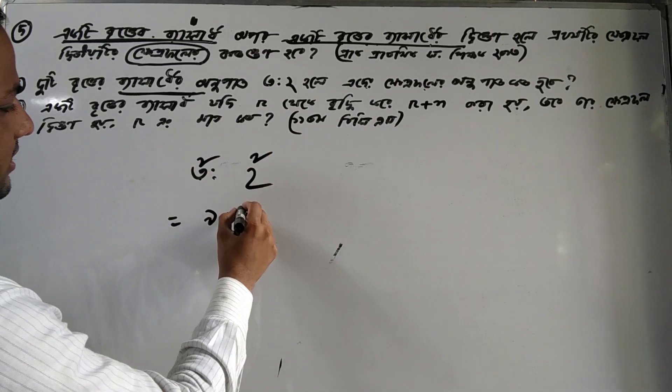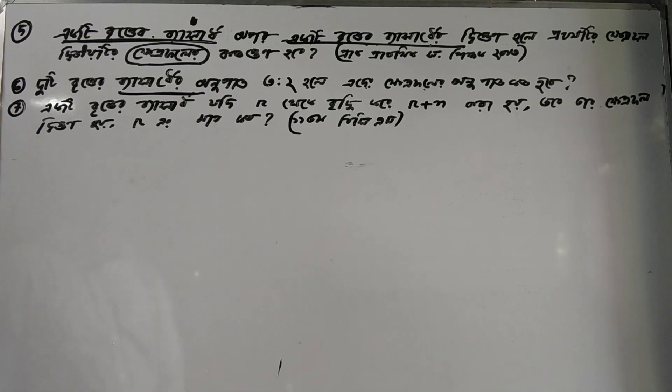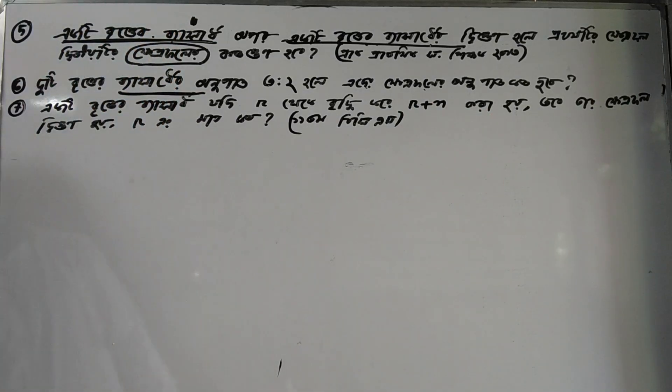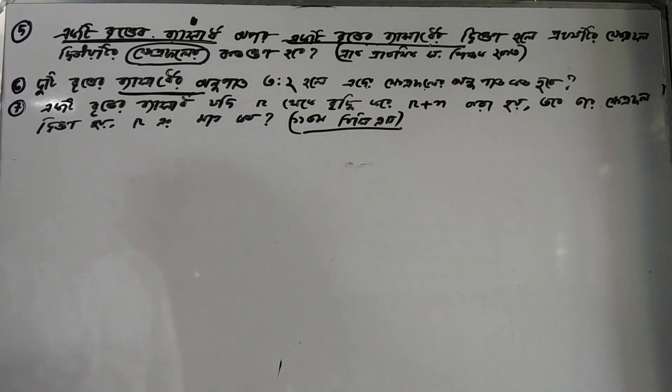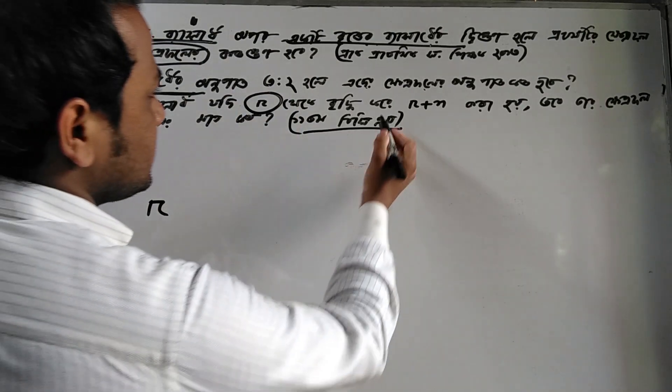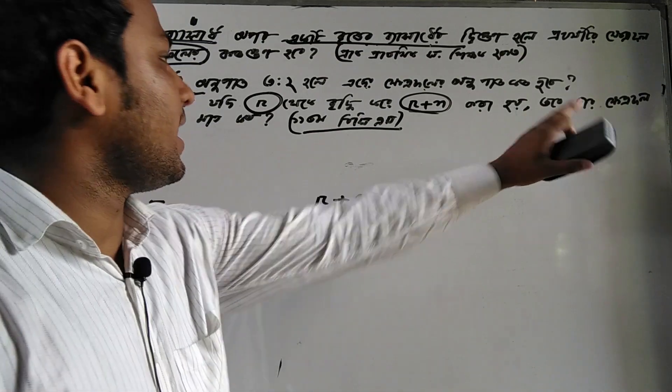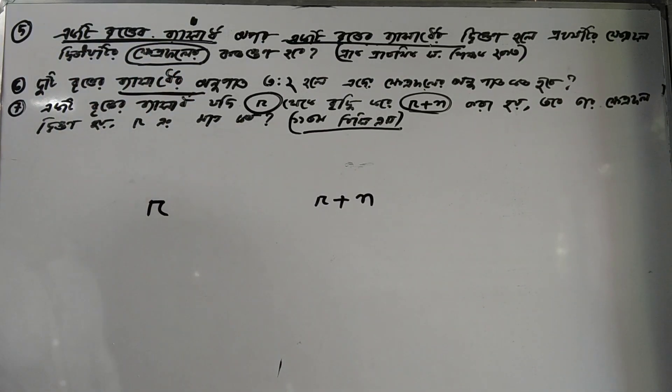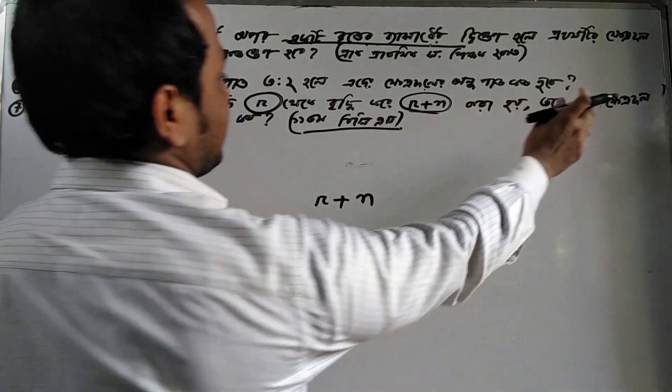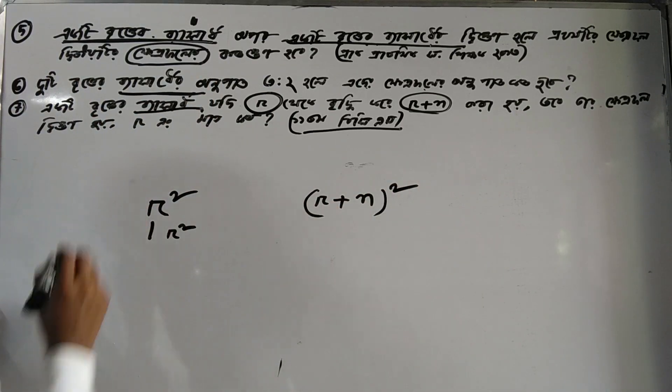Looking at option number 7, we see r plus n to some power. Now I'll demonstrate the technique. We need to calculate this correctly by expanding the expression. The answer involves understanding how to manipulate algebraic expressions properly.